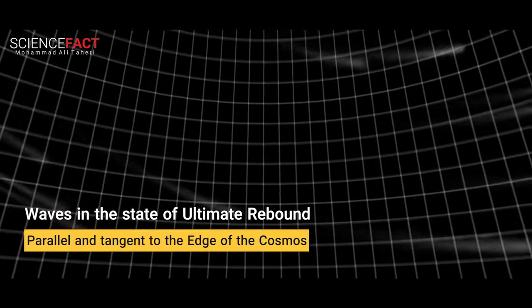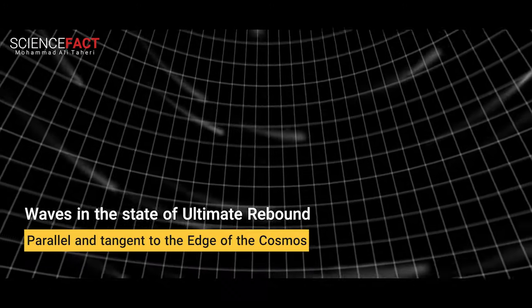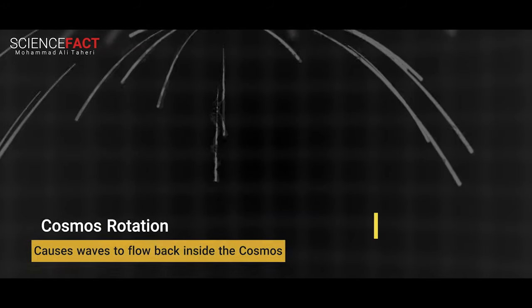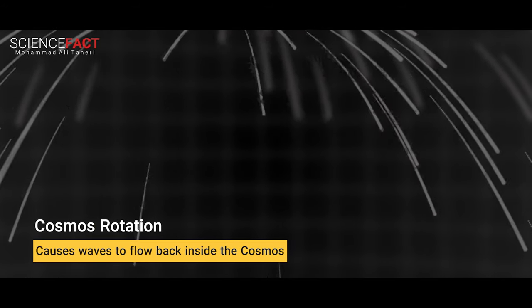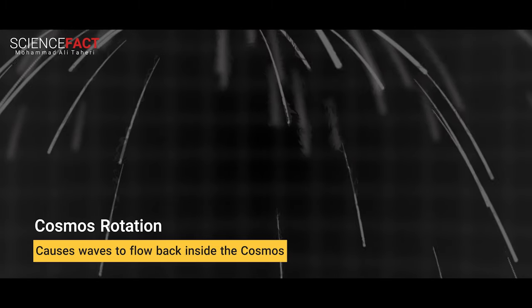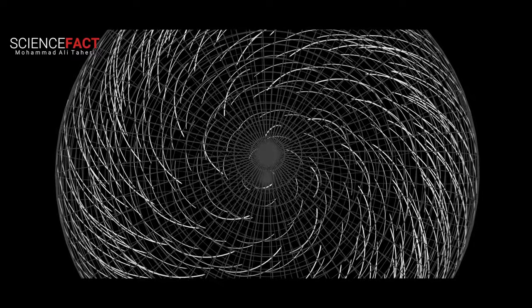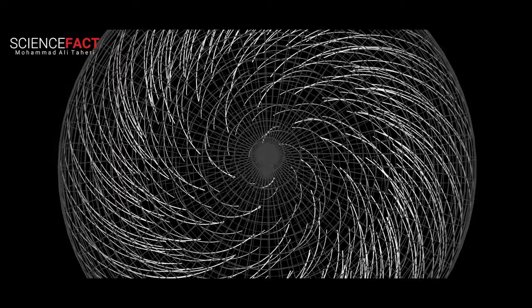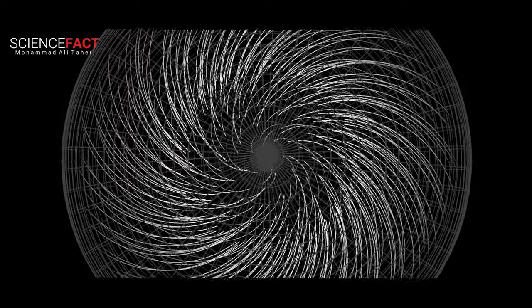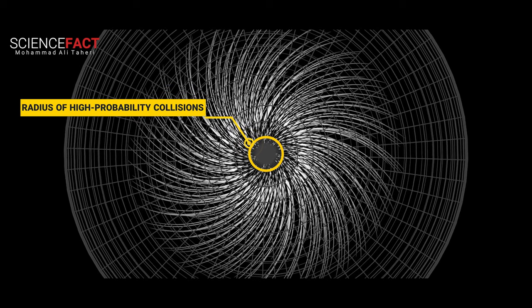At the final point of the cosmic rebound, the waves become completely parallel and tangent to the edge of the cosmos. Following the intrinsic spiral motion of the cosmos, they return back inside. All of these waves move back into the cosmos, but it takes billions and billions of years for them to find the possibility of colliding with each other at some distance from the center of the cosmos.